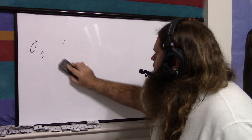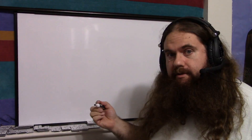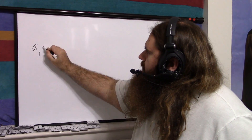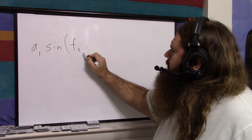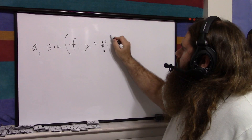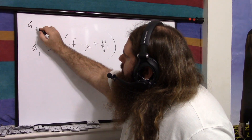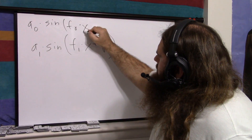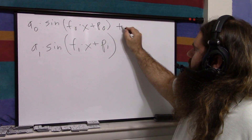That's the Taylor series. The Fourier series is the same thing except with sine waves. So you could have a0 times sine of (f0 times x plus p0), plus a1 times sine of (f1 times x plus p1), and so on.